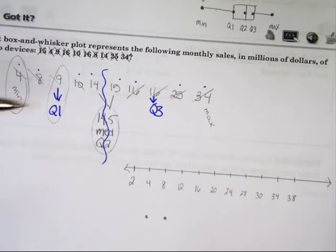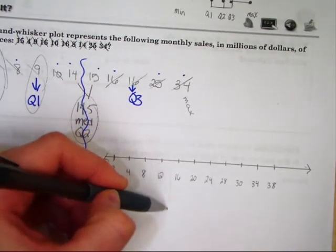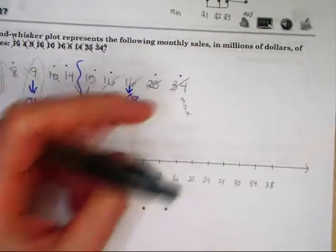Next, put a dot at your median, 14 and a half. Again, be as accurate as possible.